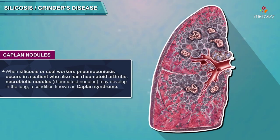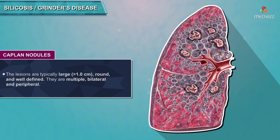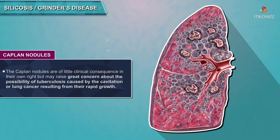Caplan nodules: When silicosis or coal workers' pneumoconiosis occurs in a patient who also has rheumatoid arthritis, necrobiotic (rheumatoid) nodules may develop in the lung — a condition known as Caplan syndrome. The lesions are typically large (more than 1 cm), round, and well-defined; they are multiple, bilateral, and peripheral. These Caplan nodules often grow much more quickly than typical silicotic nodules and may undergo central necrosis or cavitation. They may also disappear spontaneously, but raise concern about tuberculosis or lung cancer.